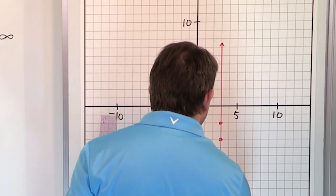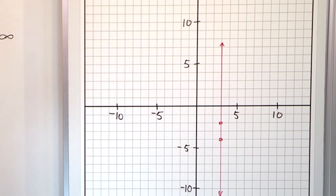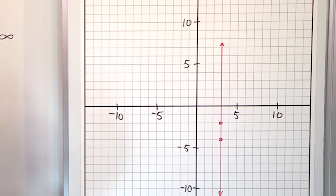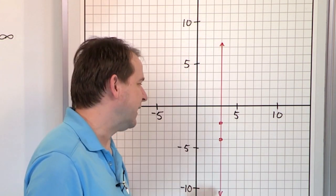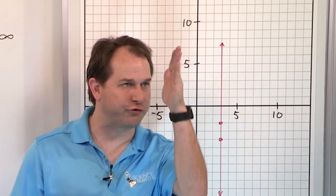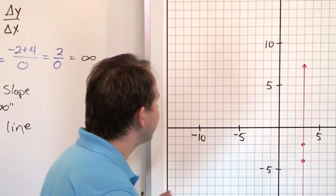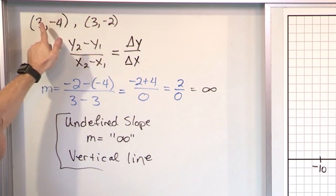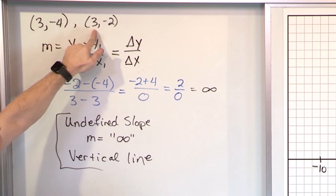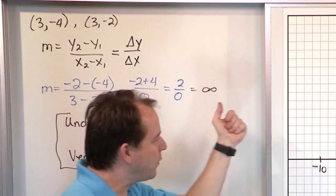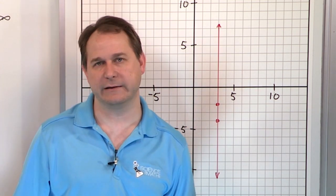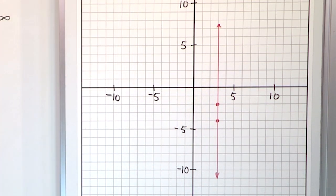It goes straight up and down. The slope of any vertical line gives you infinity or undefined — either way is fine. You can also see this in the points: any time both points on the line have the same x-value (3 in this case), you know right away it must be vertical, because the only way that can happen is if the points are stacked directly on top of each other.